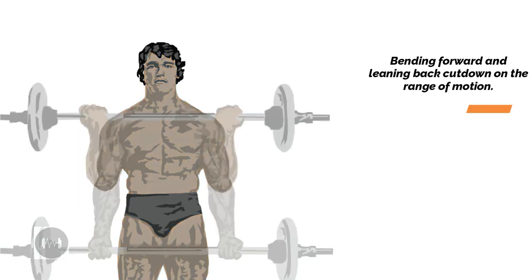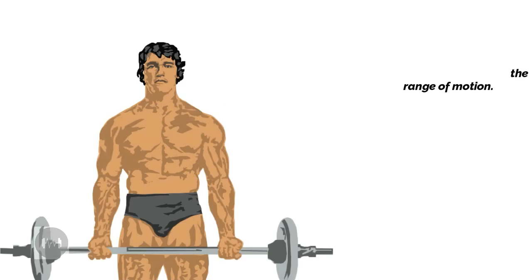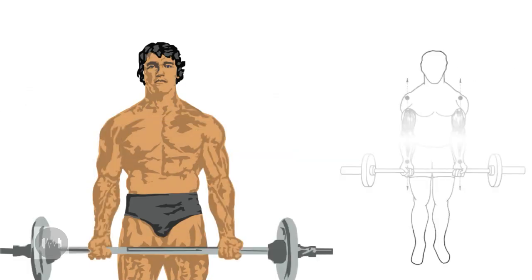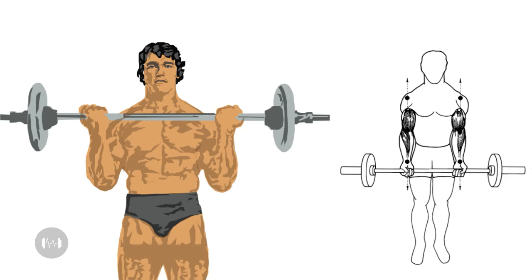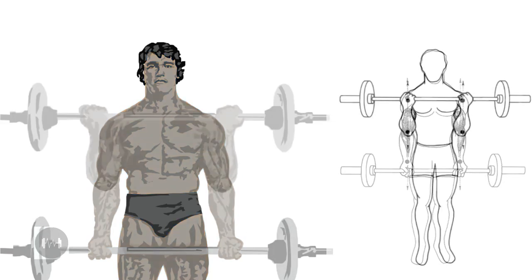Bending forward and leaning back cut down on the range of motion. To build maximum mass and work the total surface of the biceps, do barbell curls with your hands shoulder width apart.